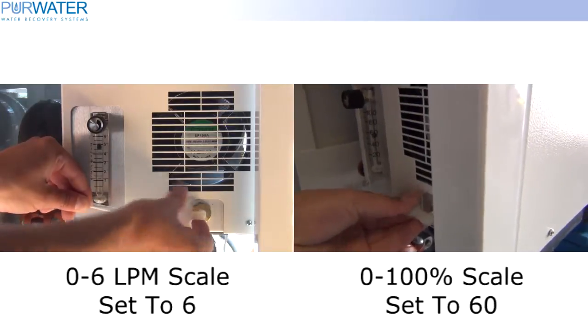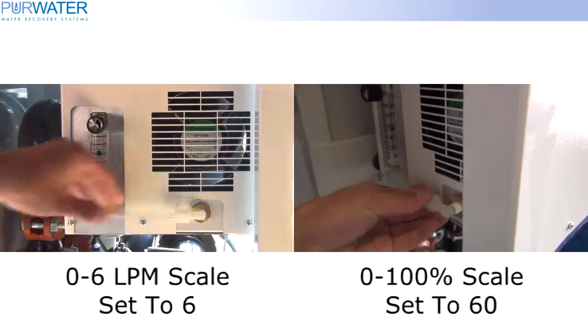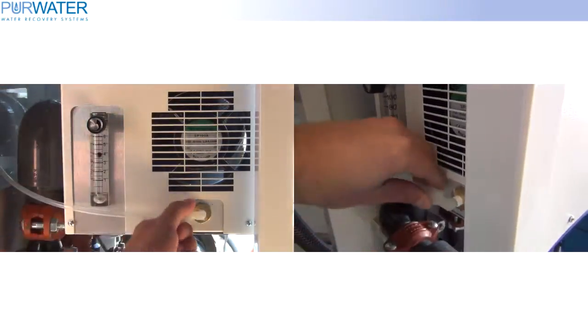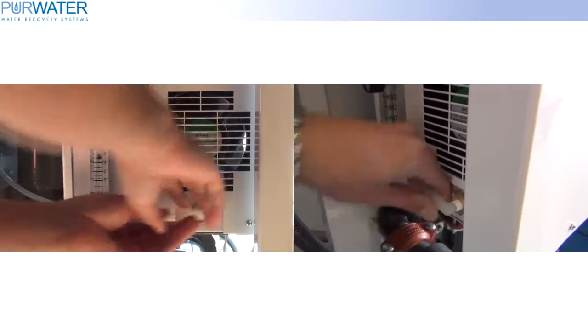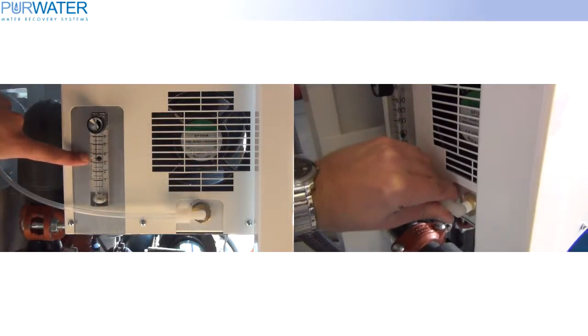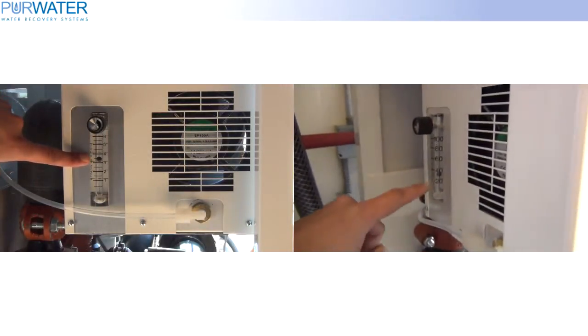Now connect the tube back up and make sure the connection is snug. You will notice that the ball on the flow meter may drop. This is okay since we are creating back pressure from the ozone unit.